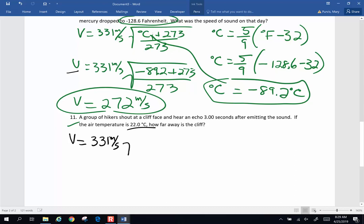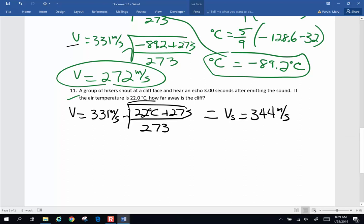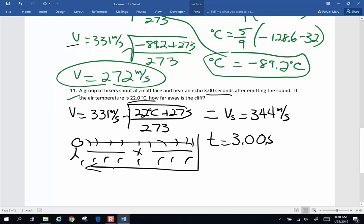331 meters per second times the square root of 22 degrees Celsius plus 273 to make it into Kelvin divided by 273. And so when I plug that into the calculator, I get the velocity of sound on that date to be 344 meters per second. Now we've got people who are shouting at a cliff. So you've got somebody standing over here and they're screaming at a cliff. The sound waves go some distance X, and then the sound comes back. Now, if they hear this three seconds, so the time of 3.0 seconds, is the time for it to travel not just X but return, the total distance is 2X.